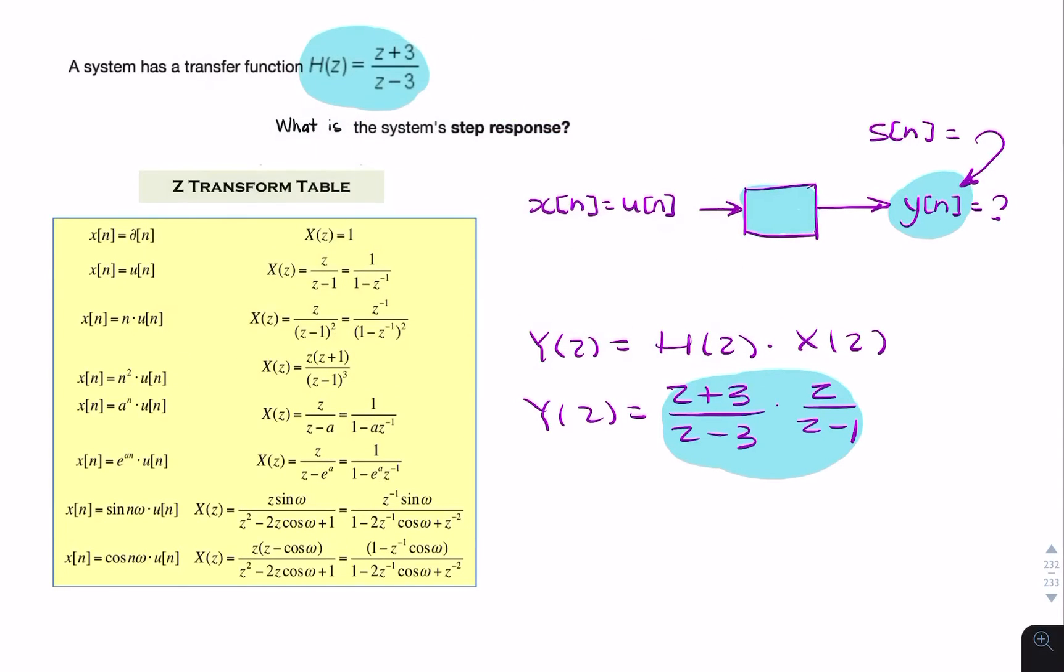I can write this as y of z over z equals z plus 3 over z minus 3 times z minus 1, and then split that into partial fractions.